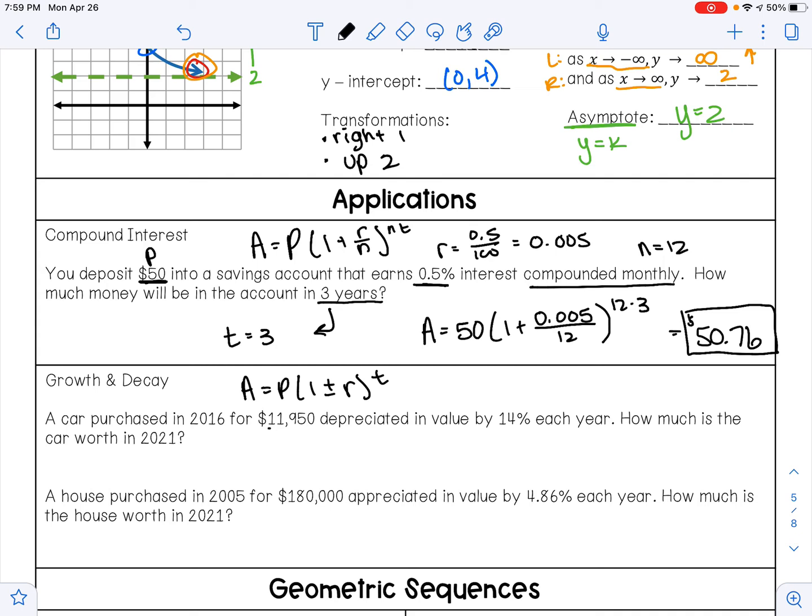So the initial value, the $11,950, that's P. It's depreciating, and so when it's depreciating, that's when we're going to use the minus sign. Our rate is 14%, which as a decimal is 0.14. And then the time, T, started in 2016, and now it's 2021, so that's five years.